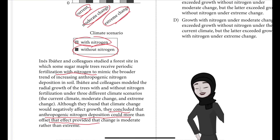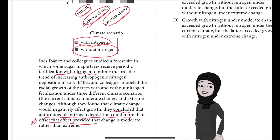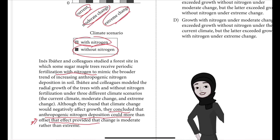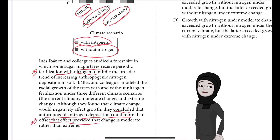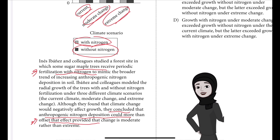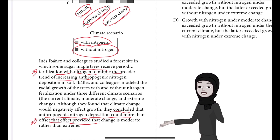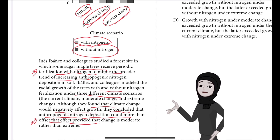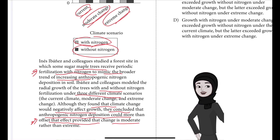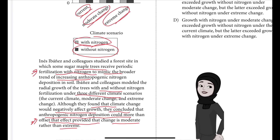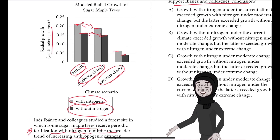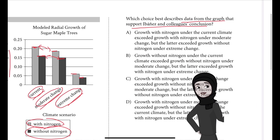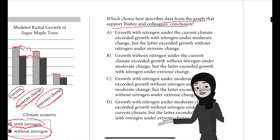What they concluded is that anthropogenic nitrogen deposition could offset the effect of climate change. They gave sugar maple trees periodic fertilization with nitrogen to mimic increasing nitrogen deposition in soil. What they found is that climate change negatively affects growth, but that can be offset if the climate change is moderate rather than extreme — it significantly affects growth only if the change is extreme.